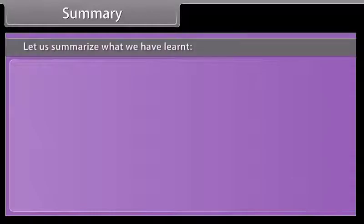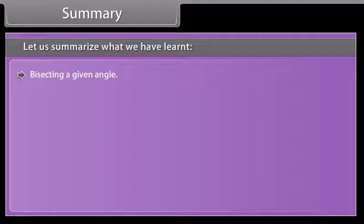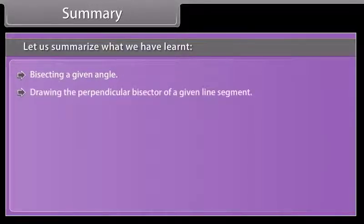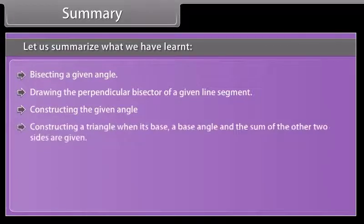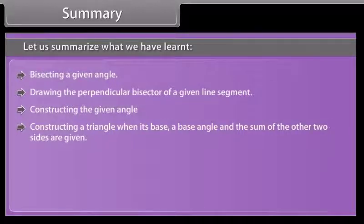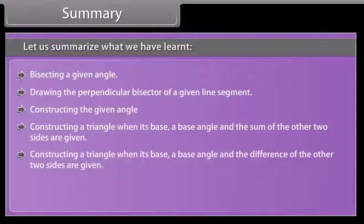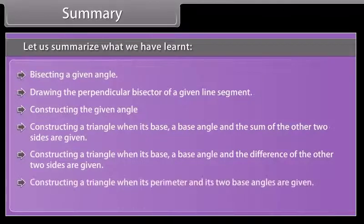Let us summarize what we have learned: bisecting a given angle; drawing the perpendicular bisector of a given line segment; constructing a given angle; constructing a triangle when its base, a base angle, and the sum of the other two sides are given; constructing a triangle when its base, a base angle, and the difference of the other two sides are given; and constructing a triangle when its perimeter and its two base angles are given.